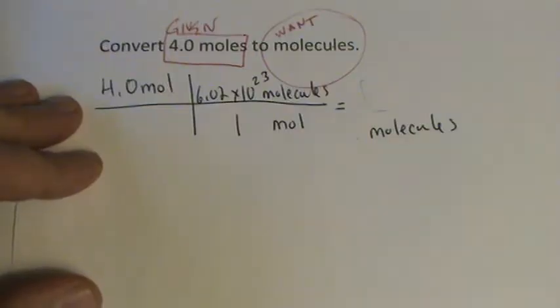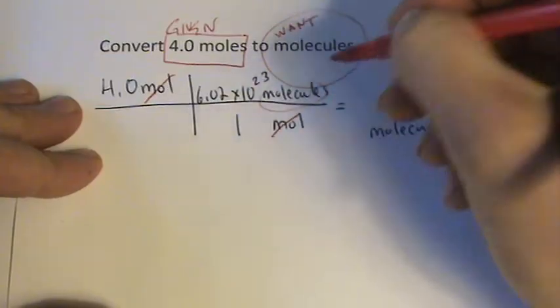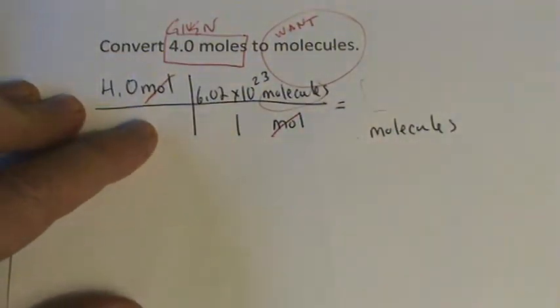Once I've done that, everything's set up. If I did it right, moles will cancel out, I'll be left with molecules. So the question becomes, how do you multiply 4 times 6.02 times 10 to the 23rd?